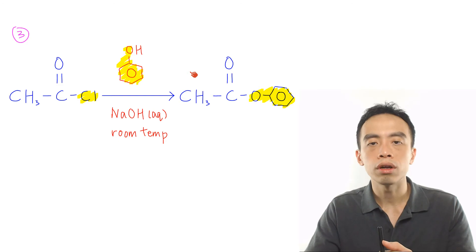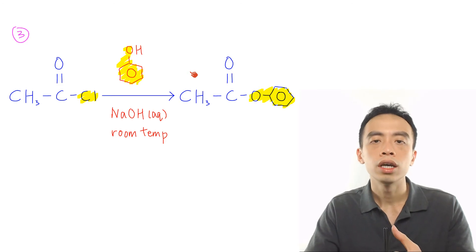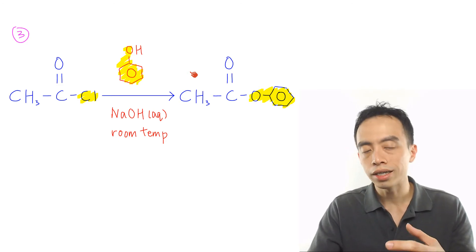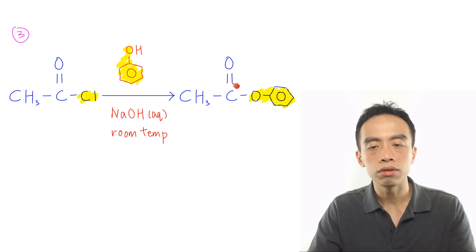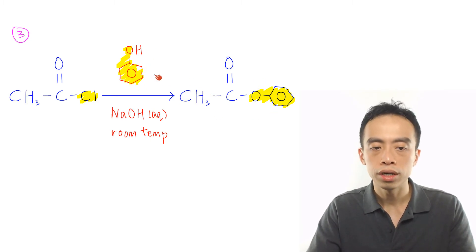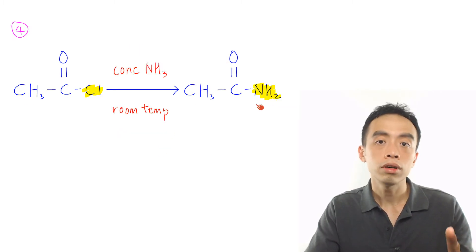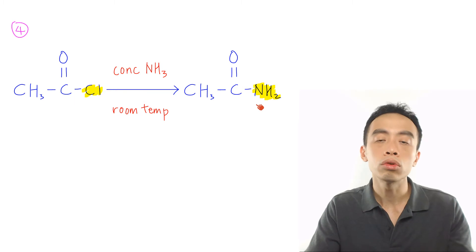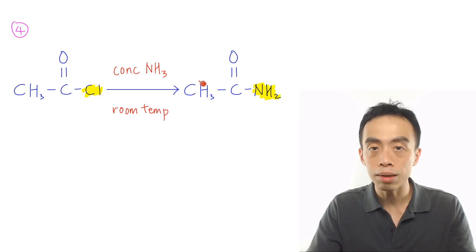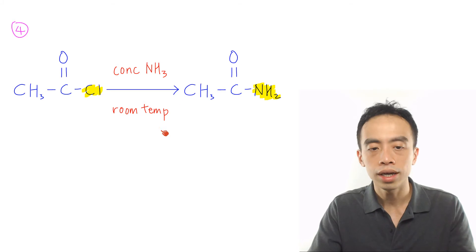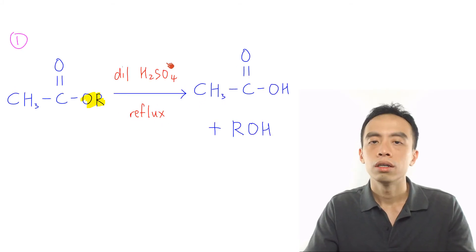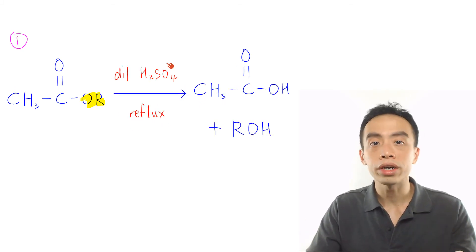The third masnone reaction of acid chloride is still esterification but it involves phenol to give us a phenyl ester. This is done using phenol in the presence of NaOH aqueous at room temperature. Reaction number four involving acid chloride would be the condensation reaction to form amides. This is done using concentrated ammonia at room temperature.